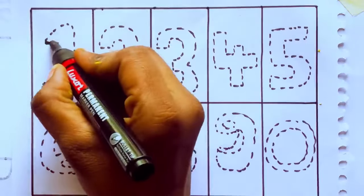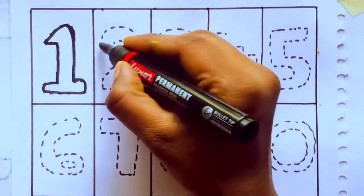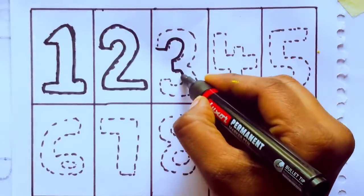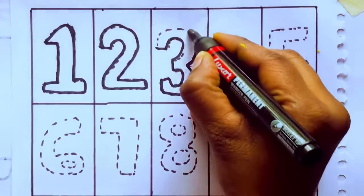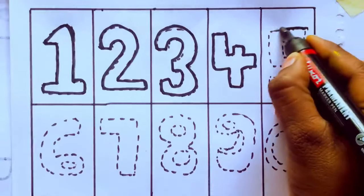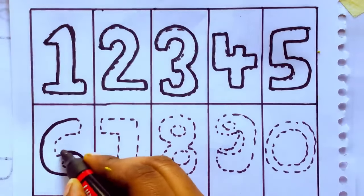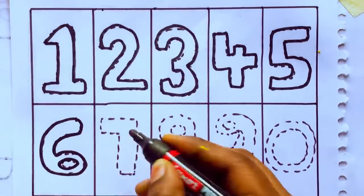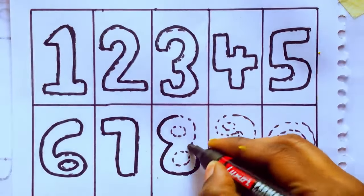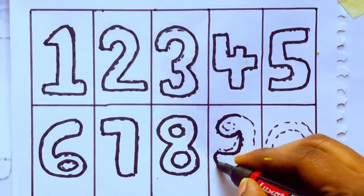Okay, let's draw the thick line of all numbers. O-N-E, 1. T-W-O, 2. T-H-R-E-E, 3. F-O-U-R, 4. F-I-V-E, 5. S-I-X, 6. S-E-V-E-N, 7. E-I-G-H-T, 8. N-I-N-E, 9.